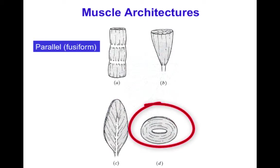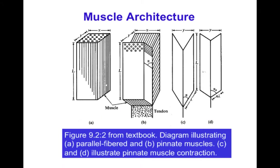Consider two muscles with the same volume and same number of sarcomeres — one parallel-fibered and one bipennate with a large pennation angle alpha relative to the tendon axis. Their tendons are oriented the same way and their job is to generate force along the same axis. The way the muscle shortens and changes shape differs, and there is a basic difference between them related to the two meanings of contraction: shortening and force development.